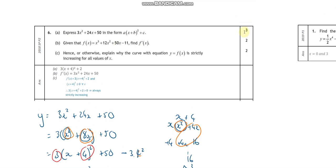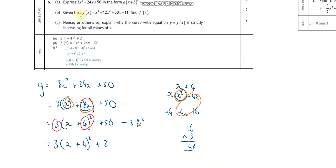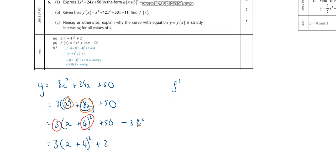That's a nice three marks. Then it says find f'(x). So f'(x) is going to be equal to - differentiating 3x squared plus 24x plus 50 - that gives 6x plus 24. Nice, that should be two marks. Easiest two marks you'll get on the paper.